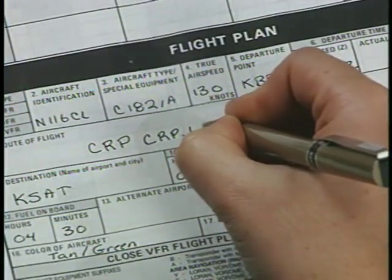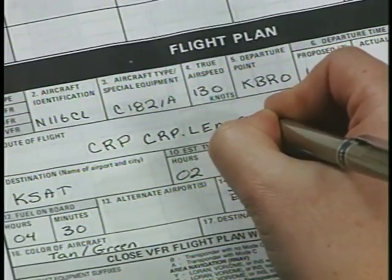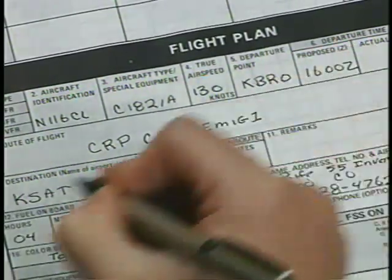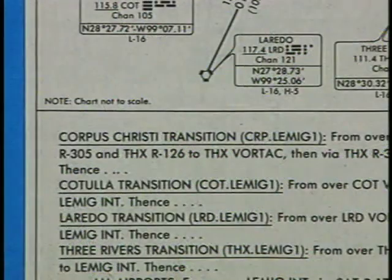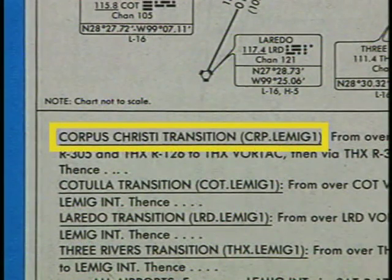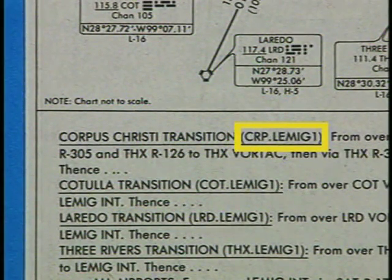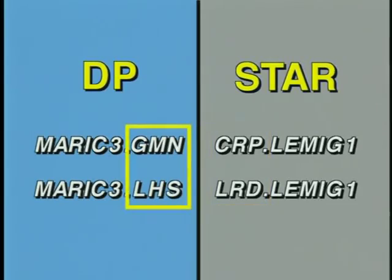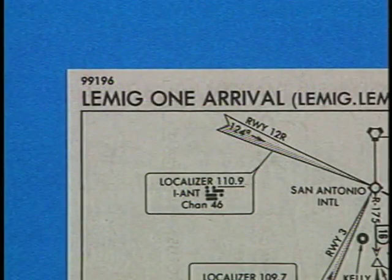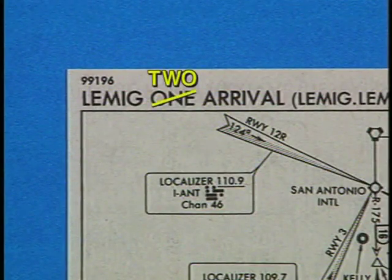When you file for a STAR on your flight plan, use an appropriate code just as you do for a departure procedure. For example, the code for the Corpus Christi transition of the LEMIG-1 arrival would be CRP.LEMIG-1. Notice that the transition portion of the code is listed first for a STAR, but last on a departure procedure. Whenever a major revision occurs to a STAR, the number is changed. The next revision for this STAR will be the LEMIG-2 arrival.